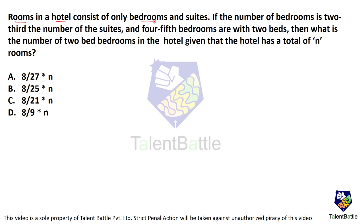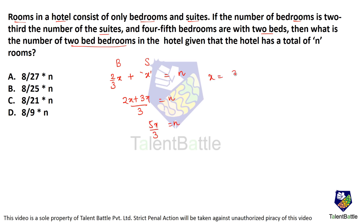Rooms in a hotel consist of only bedrooms and suites. If the number of bedrooms is 2/3 the number of suites, and 4/5 of bedrooms are with 2 beds, what is the number of 2-bed bedrooms given that the hotel has a total of n rooms? Let the number of suites be x. Number of bedrooms is 2/3 of x. Total rooms: x plus 2x/3 equals n, so 5x/3 equals n and x equals 3n/5. Total bedrooms are 2/3 of x, which is 2/3 times 3n/5 — giving 2n/5 bedrooms.